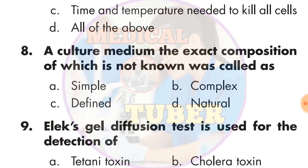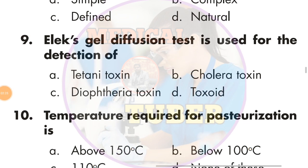The answer is A — simple. Next question: The gel diffusion test is used for detection — the answer is C — RCL. And which of the following anti-response — the answer is C — diphtheria toxin.